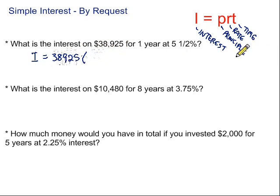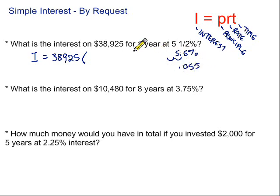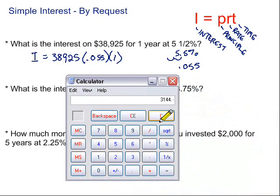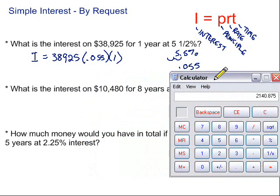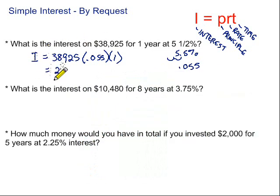R is the rate as a decimal. We have 5.5%. We want to convert that percent to a decimal, so we move it two spots to the left, giving us 0.055 as the rate. So we put in 0.055. Then T is the time in years — one year — so we multiply by one. We'll go ahead and multiply this using our calculator.